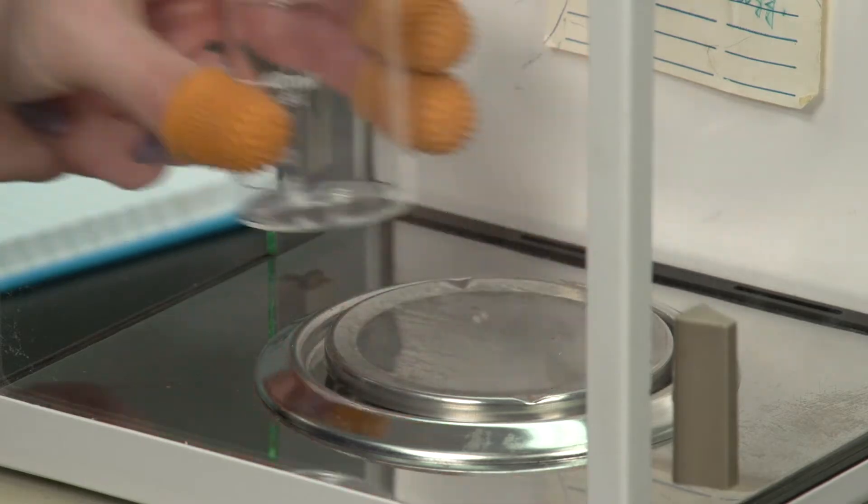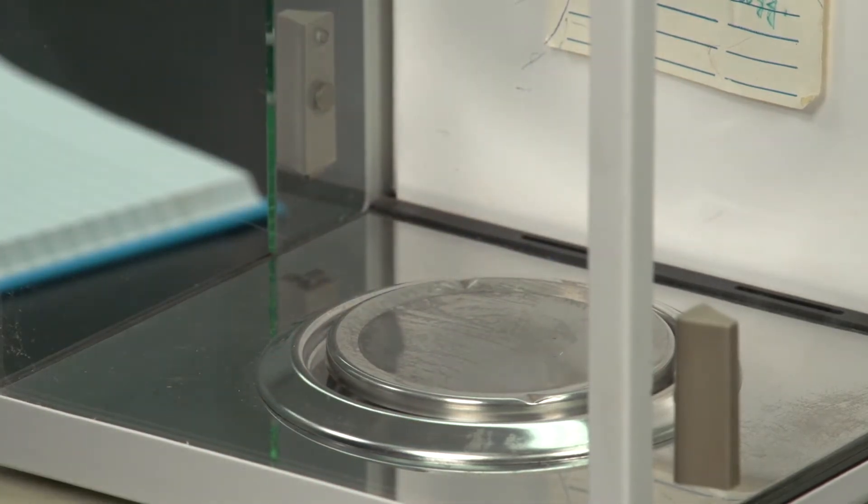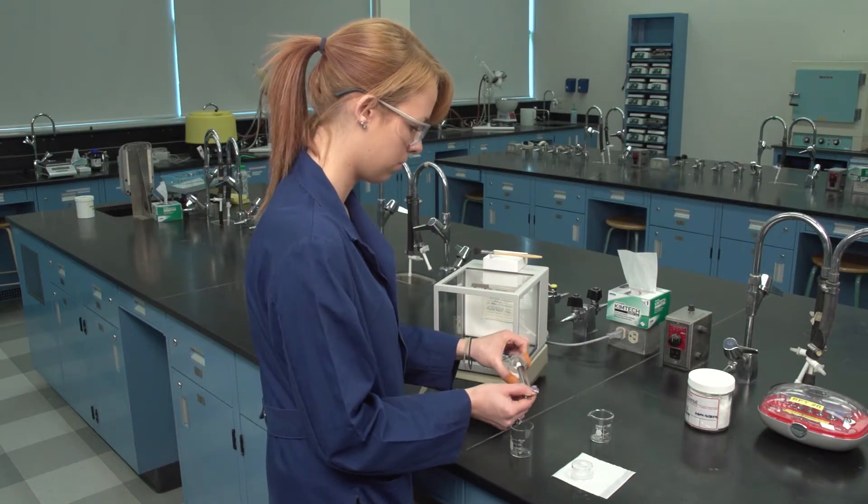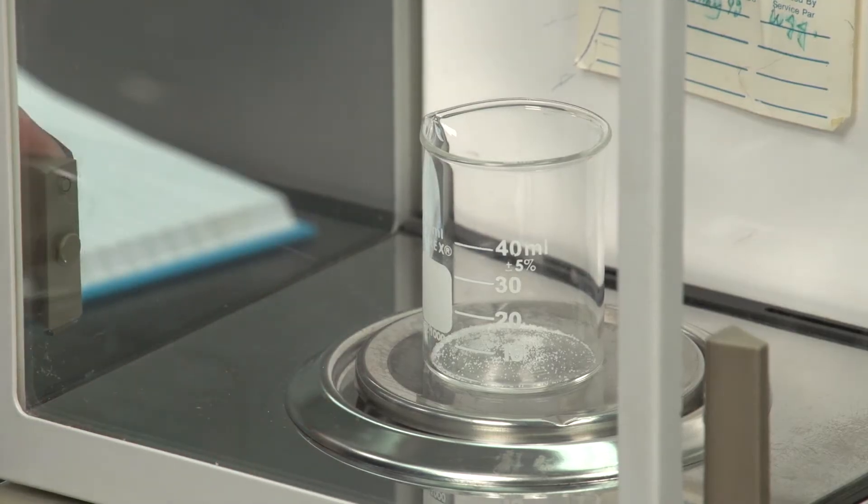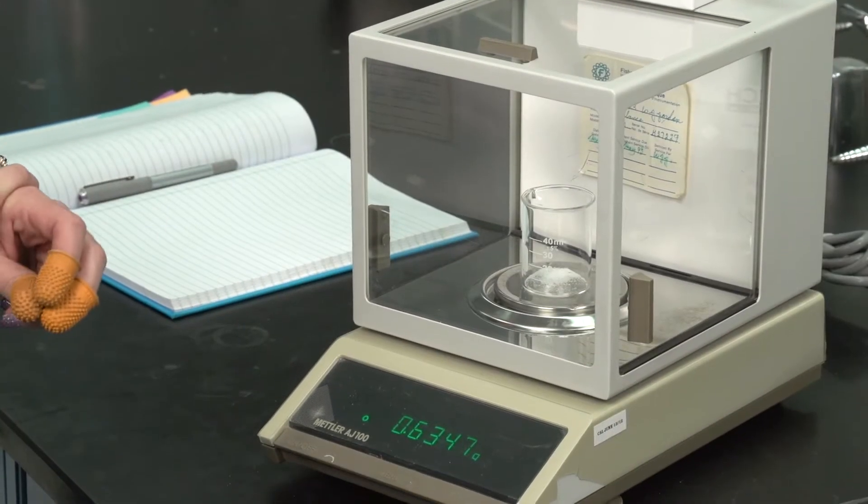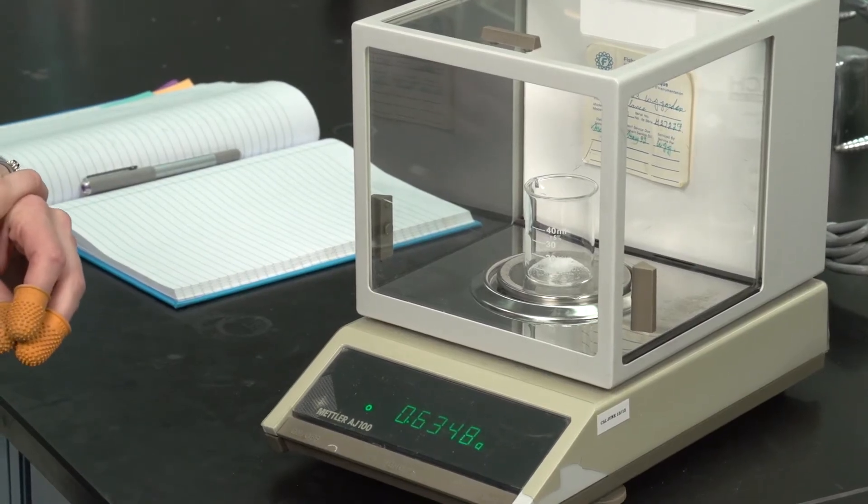Remove the weighing container from the balance. Add the substance to be weighed using a spatula or scupula. Replace the weighing container and contents on the balance pan. Close the compartment door and allow the balance to equilibrate. The mass indicated on the balance readout is the actual mass added.